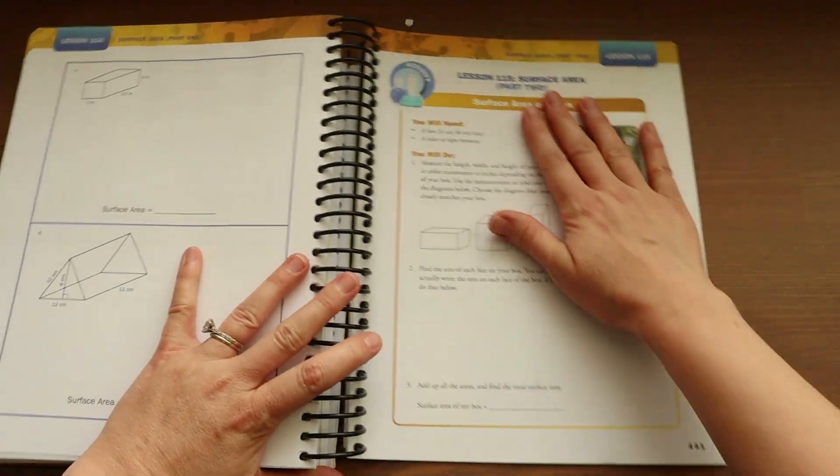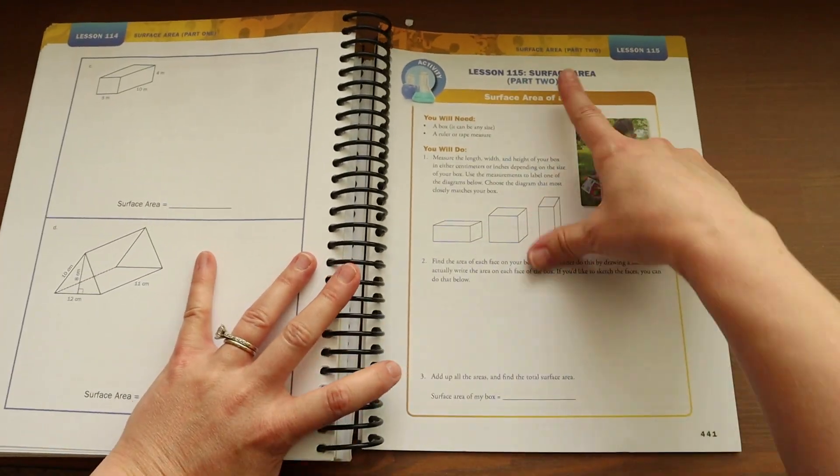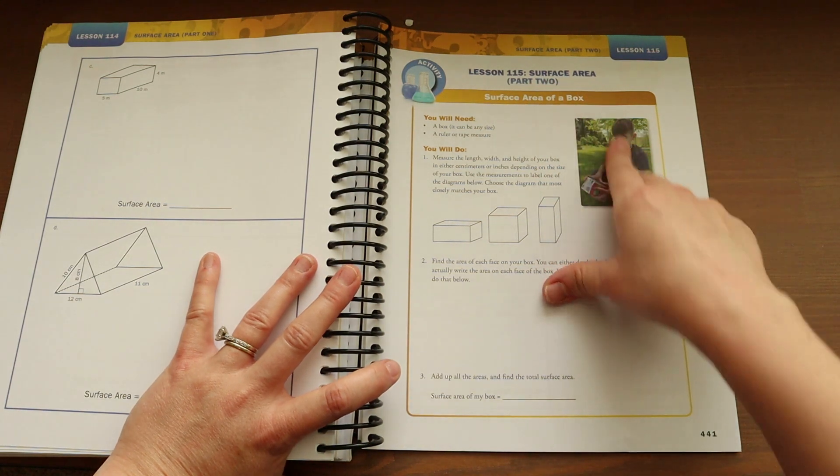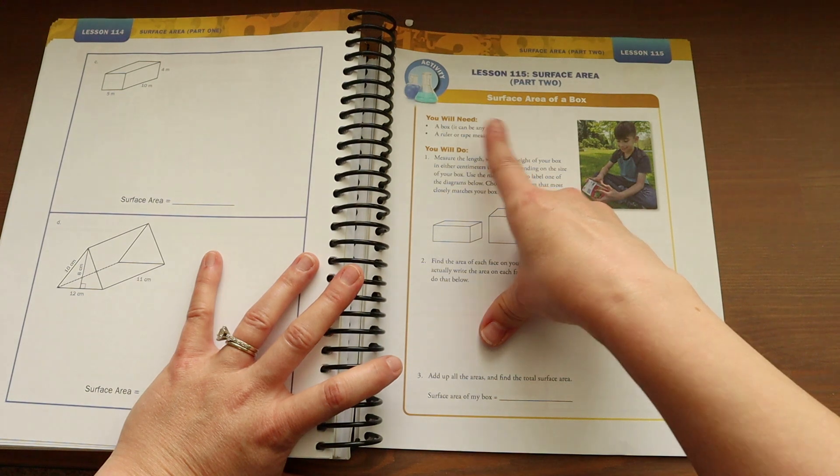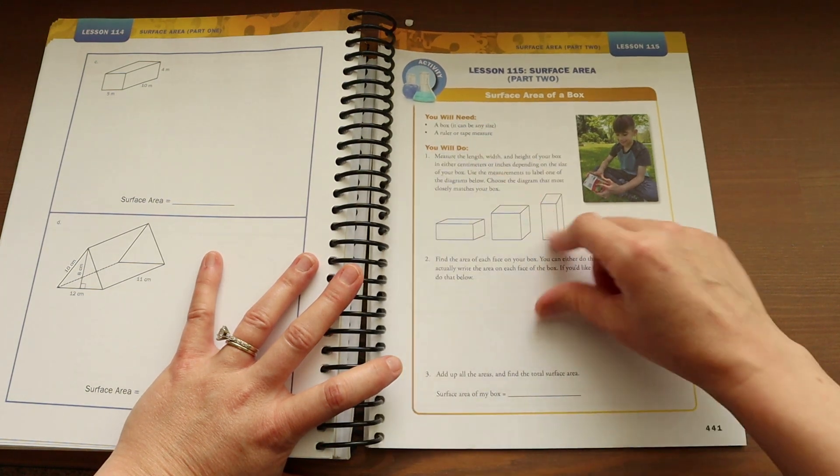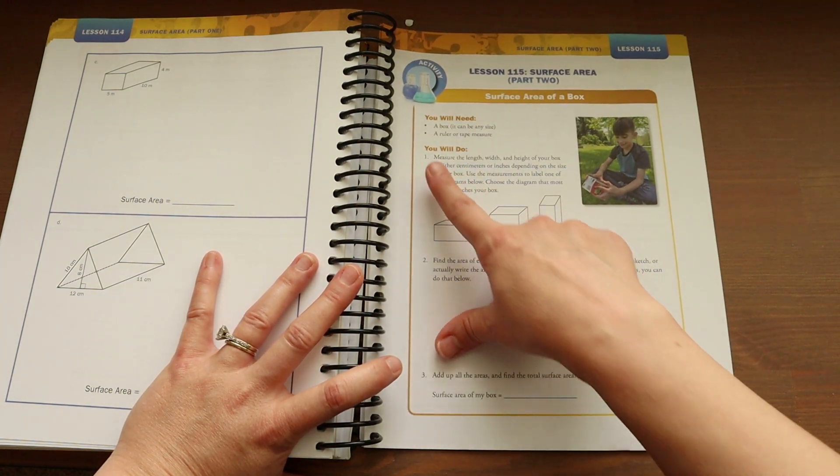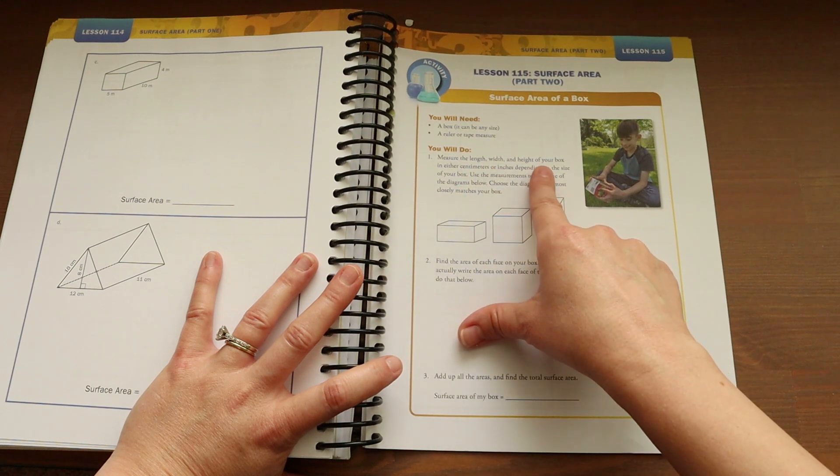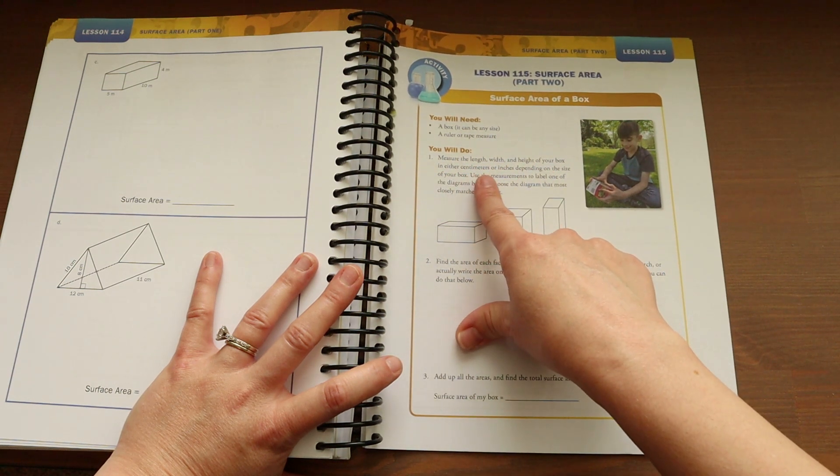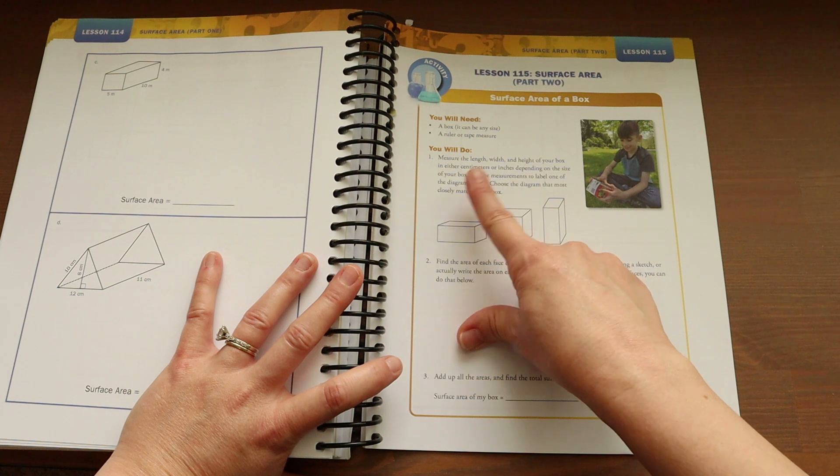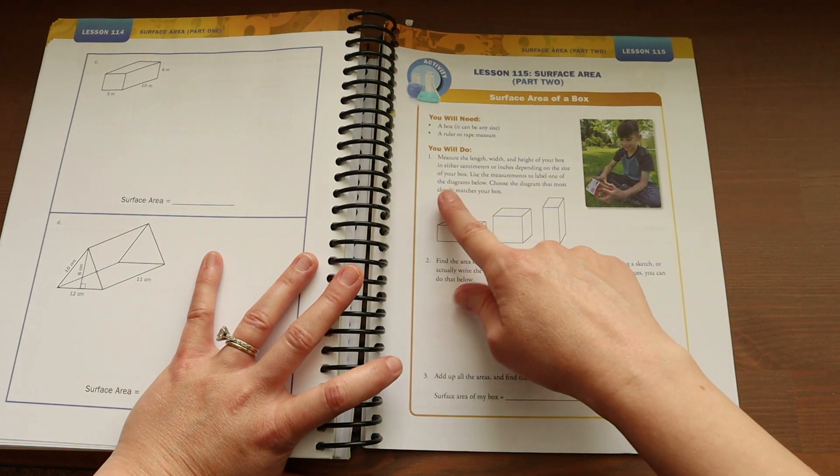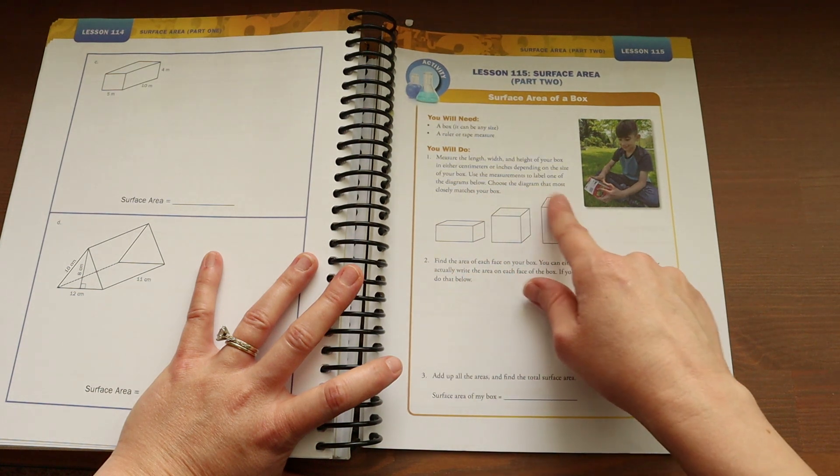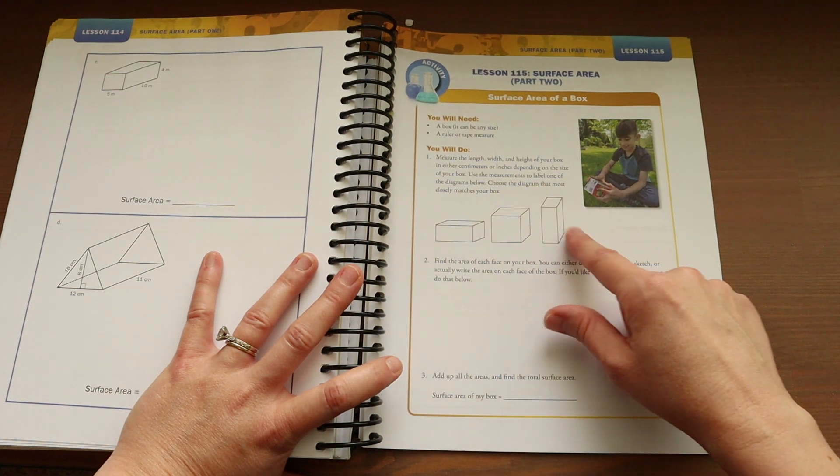Alright. So this is lesson 115. They're going to be going over surface area. So it says you will need a box that can be any size, a ruler or tape measurer. So what your child is going to do is they're going to measure the length, width and height of their box in either centimeters or inches, depending on the size of their box. They will use the measurements to label one of the diagrams below. Choose the diagram that most closely matches your box.